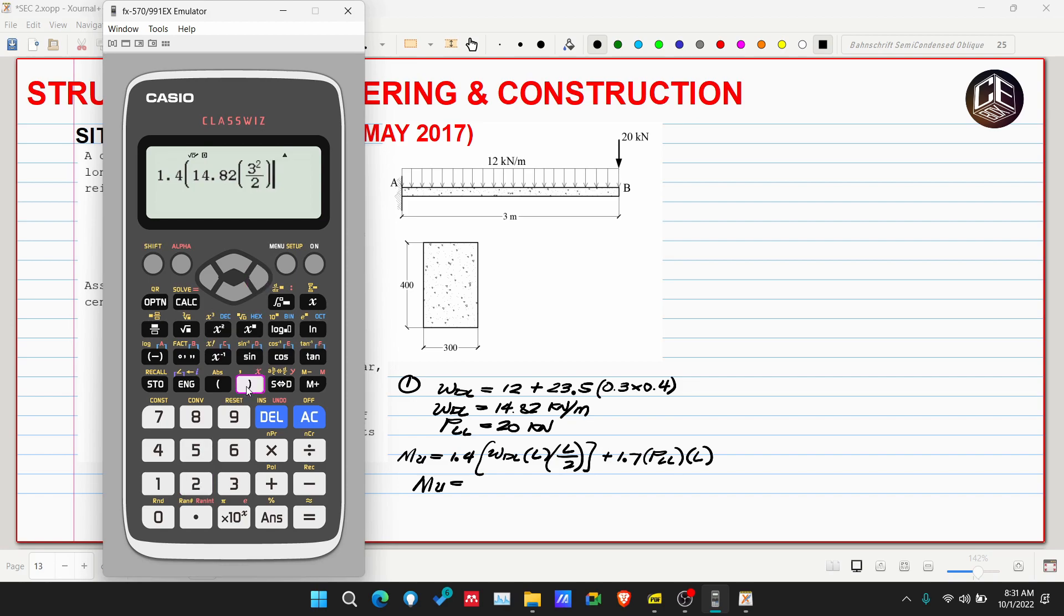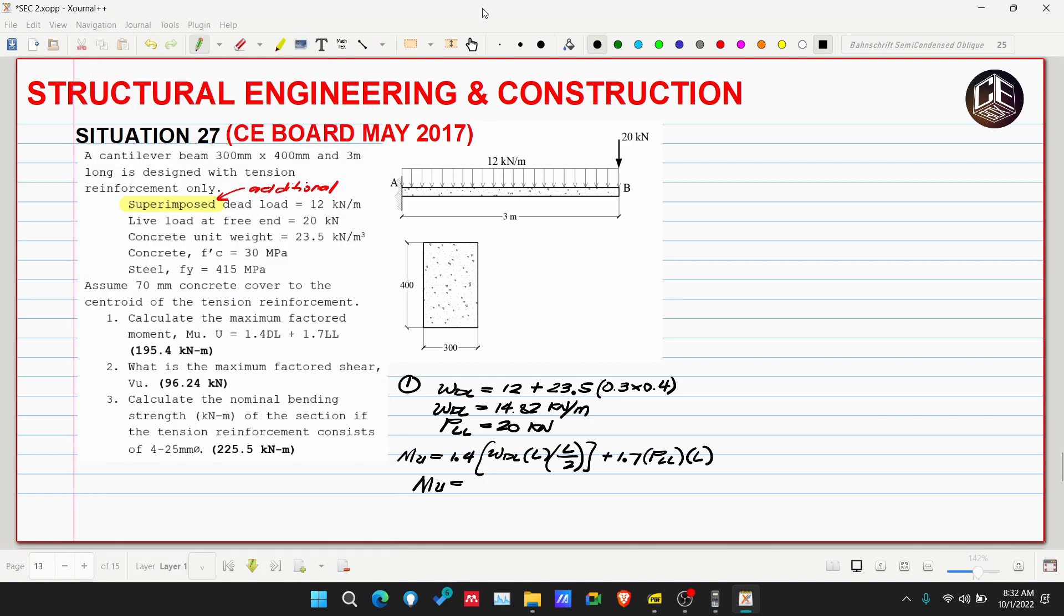1.4 multiplied by 14.82 multiplied by L which is 3 meters, and L is squared, so 3 squared over 2, plus 1.7 of PL which is 20 multiplied by L which is 3 meters, so 195.366 kilonewton meters.